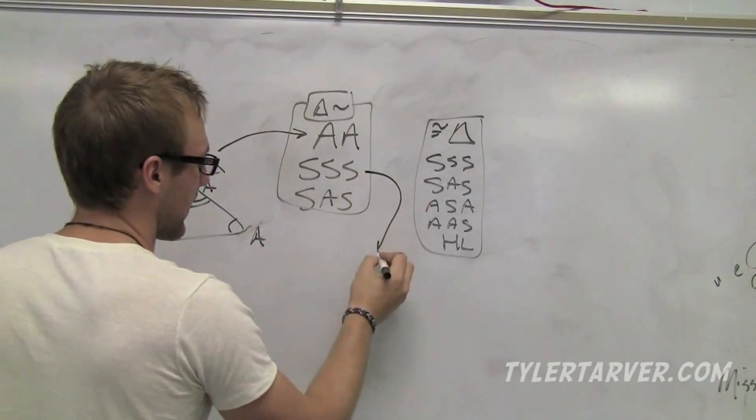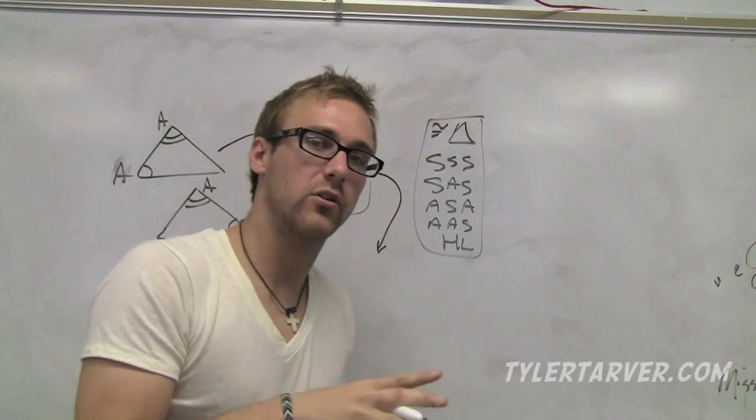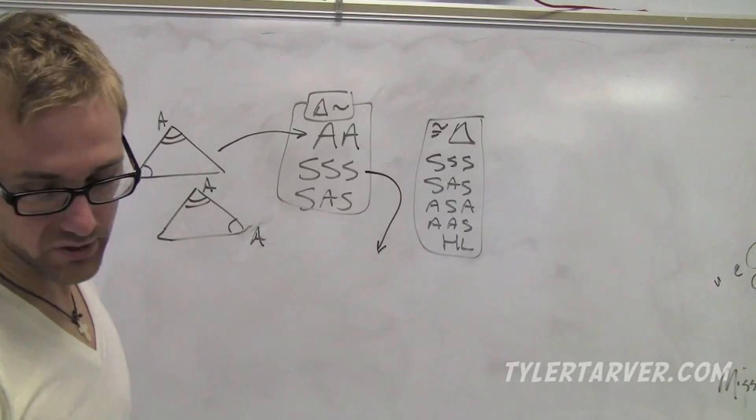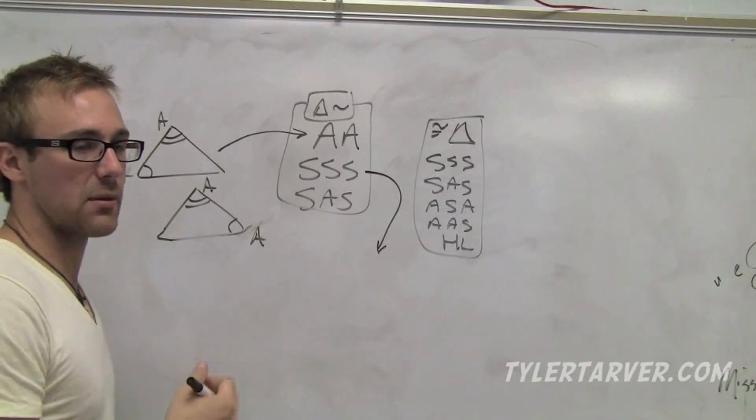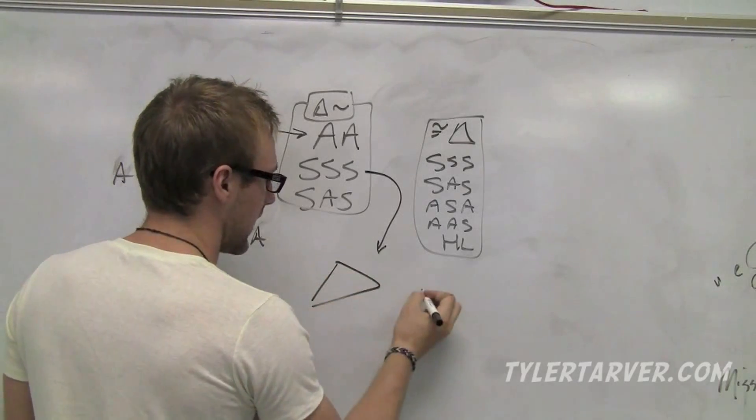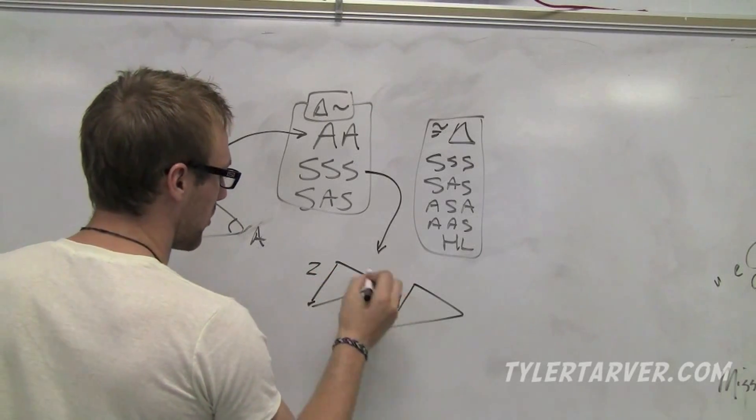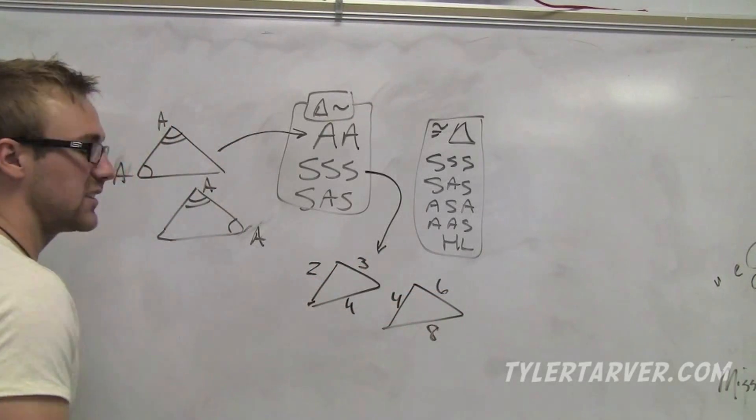Now, side-side-side. Obviously in the other one, we had to know that the sides were congruent. We don't want congruent triangles, we want similar triangles. So we don't have to know that they are all congruent with the SSS theorem. What we need to know is that they're all similar by the same amount. The similarity ratio is the exact same. Say I have two triangles here. Let's say this one is 2, that one's 4, that one's 3, that's 6, that's 4, and that's 8.